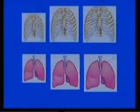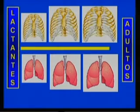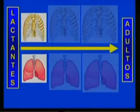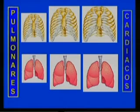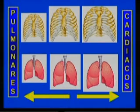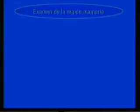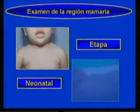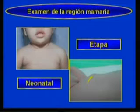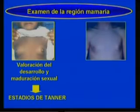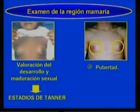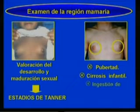La forma del tórax y los pulmones varía normalmente según la edad. En el lactante es más redondeado que en niños mayores y adultos. Además, la pared torácica es más delgada y con poca musculatura, por lo que los ruidos pulmonares y cardíacos se transmiten con más claridad. El examen de la región mamaria es importante desde la etapa neonatal, donde se puede observar tumefacción mamaria de causa hormonal. En las niñas mayores se incluye la valoración del desarrollo y maduración sexual según los estadios de Tanner. En los varones puede observarse ginecomastia durante la pubertad y en algunos casos de cirrosis infantil o por la ingestión de medicamentos.